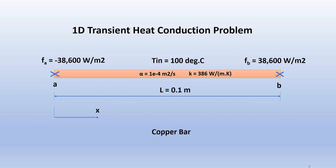Our problem is presented here. We have a 1D transient heat conduction problem: a long copper bar, 0.1 meter long. One end of the bar has a heat flux of 38,600 watts per meter square going out of the bar. Likewise, at the other end we have a heat flux of 38,600 watts per meter square going out of the bar at end B. The initial temperature of the bar is 100 degrees Celsius.